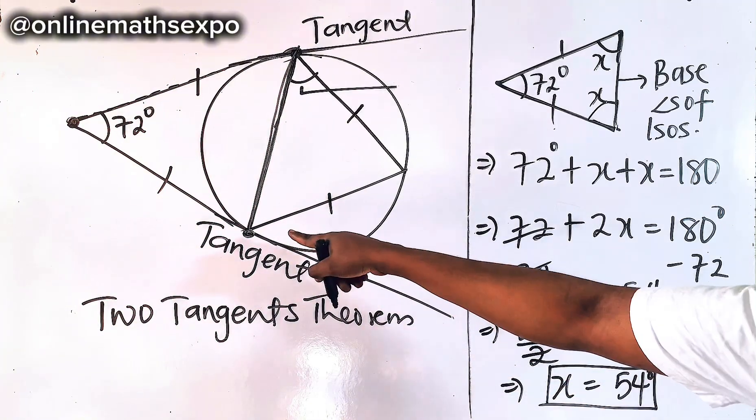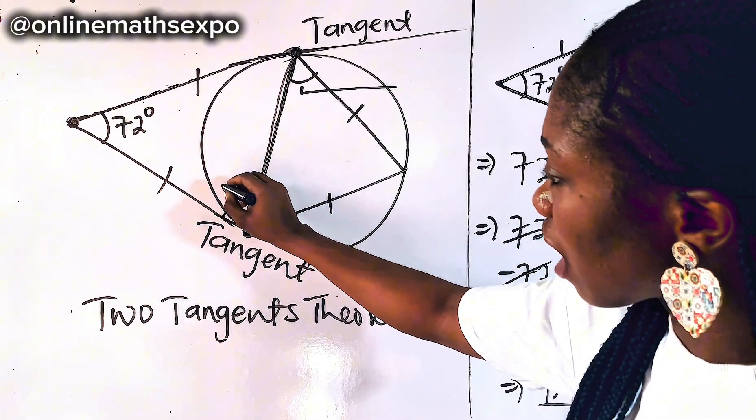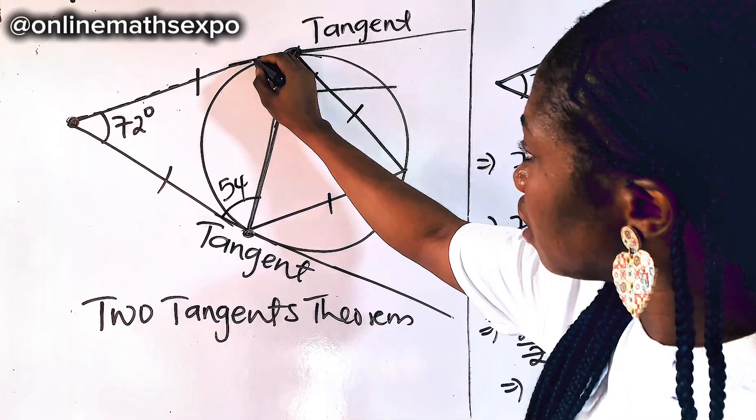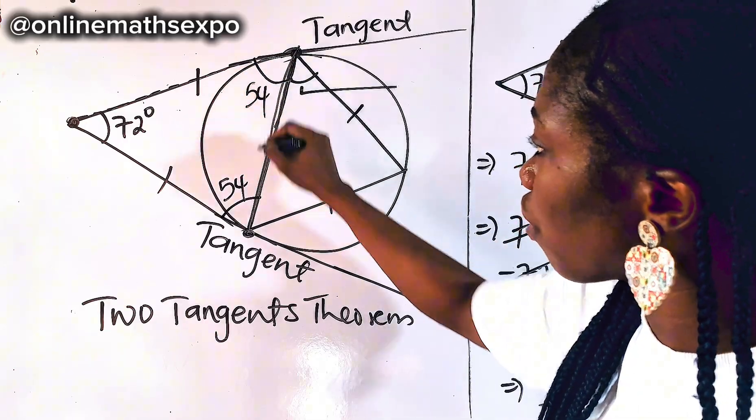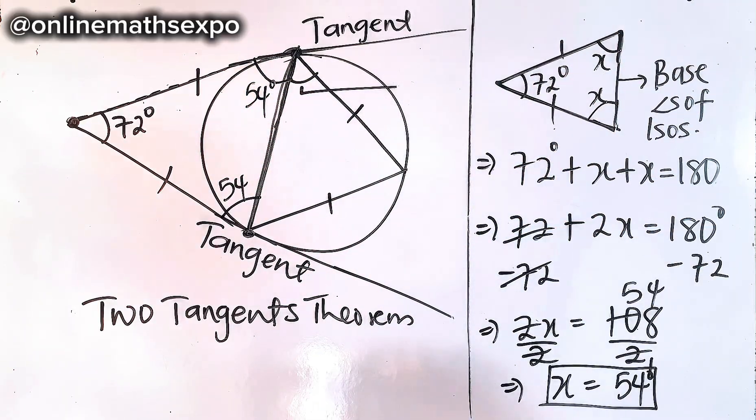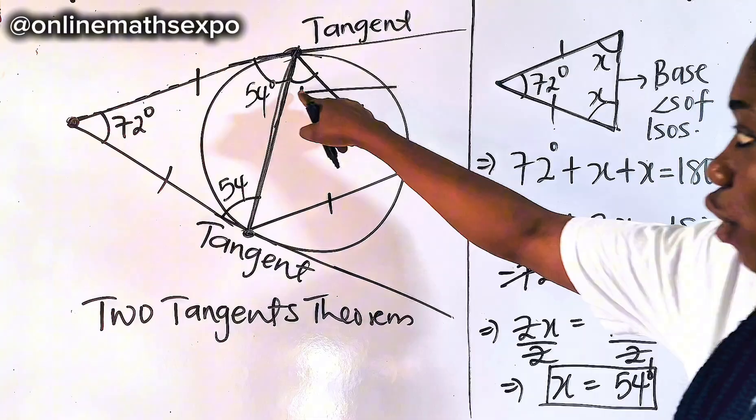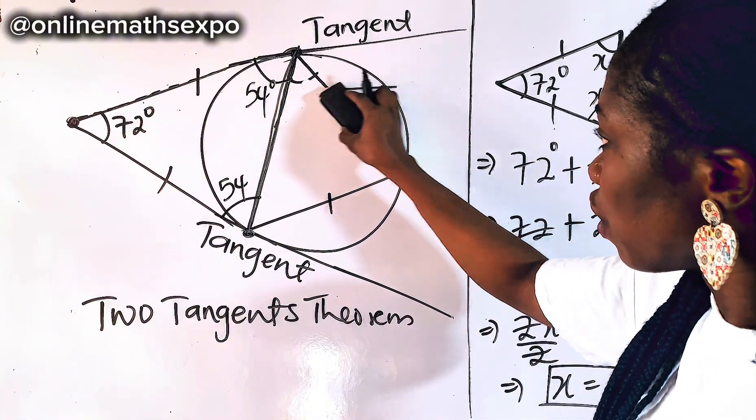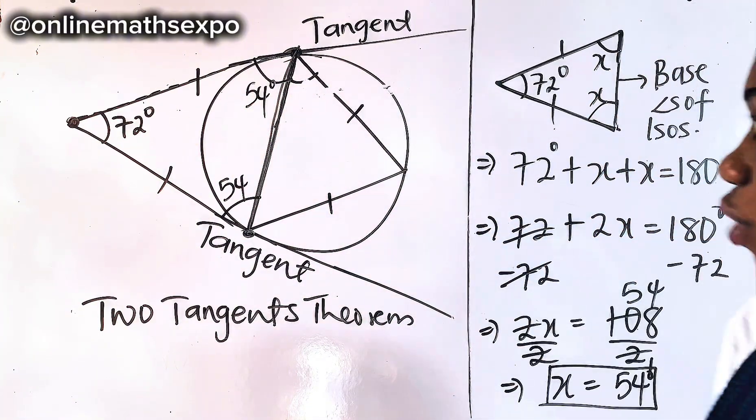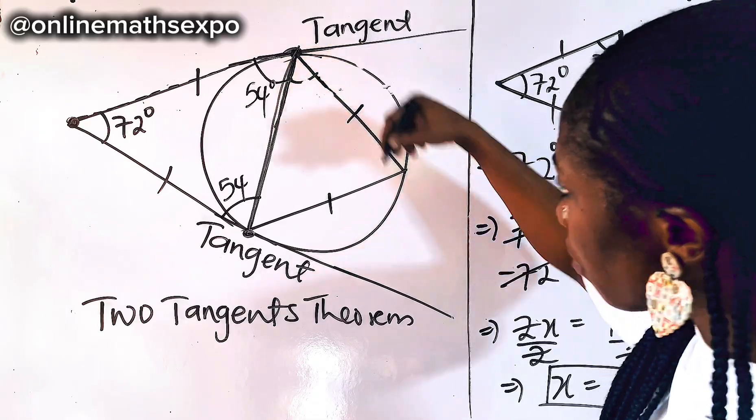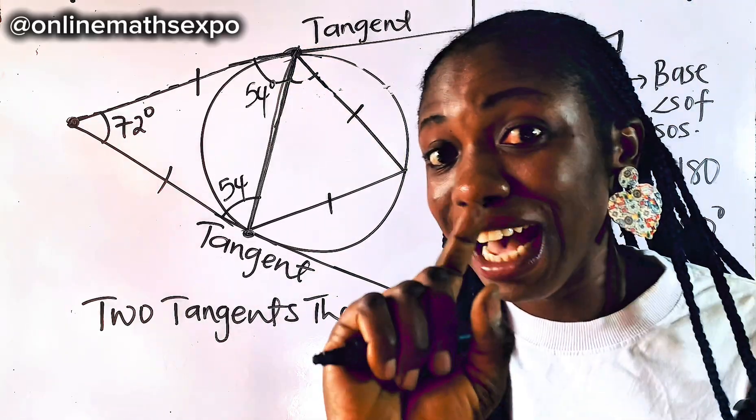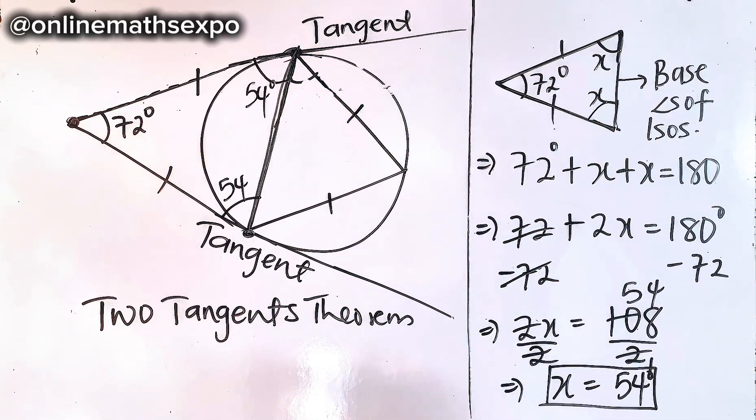Now that you have gotten this side, that means this missing angle is 54 and this one is also 54. Will it still be of help to us? Because what you want to find is this missing angle. So what do we do with these ones we have found? Go back to the diagram. Just remember another theorem.